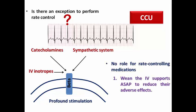So what should you do? You need to wean the IV supports as soon as possible to reduce their adverse effects and try to correct the cause of the shock — whether cardiogenic, hypovolemic, or septic shock. Do not just focus on rate control, because the tachycardia is a compensatory mechanism. Wean the IV inotropes and correct the cause in order to oppose the catecholamines and sympathetic stimulation.